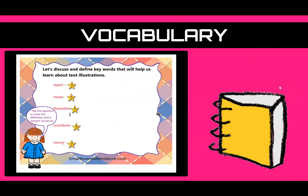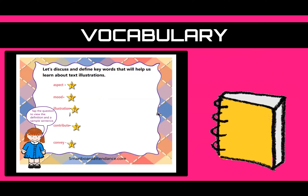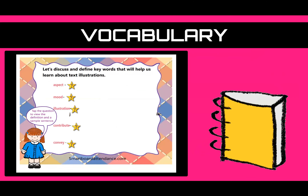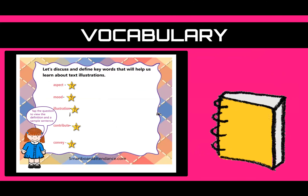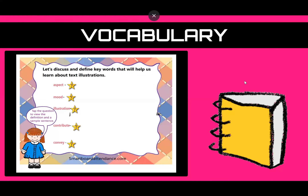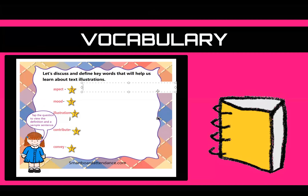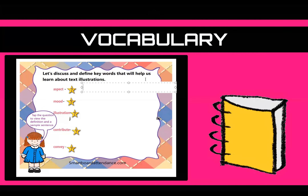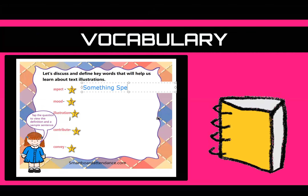First we're going to look at some vocabulary. The first word is aspect. You can write this down on your ClassKick as well.